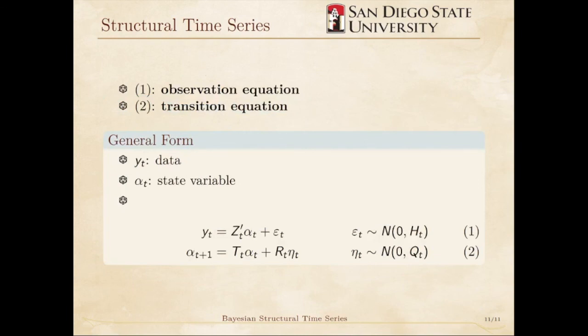Generally, a structural time series has two equations. They are called the observation equation and the transition equation. In the local level model, these would be the equations for YT and MuT, respectively.